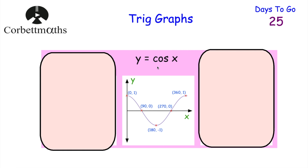Now let's have a look at the cosine graph, y equals cos x. The cos of zero is one, the cos of 90 degrees is zero, the cos of 180 degrees is negative one, the cos of 270 degrees is zero, and the cos of 360 degrees is one. The cos graph starts at one, goes down to zero, down to negative one, up to zero, and back up to one, and just carries on. So that's the graph of y equals cos x, and it's important to know what that one looks like.